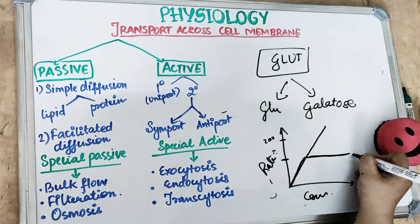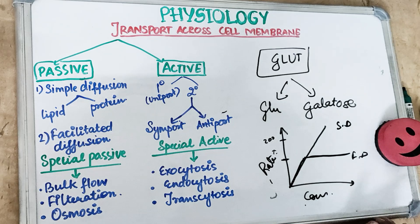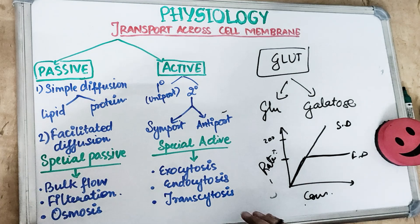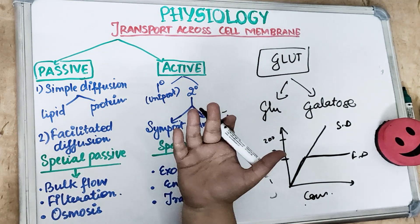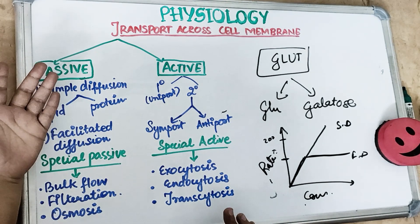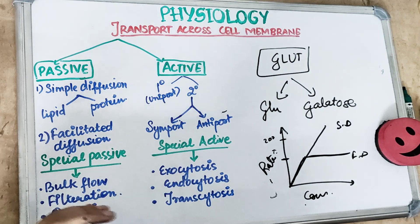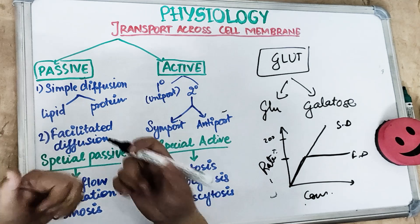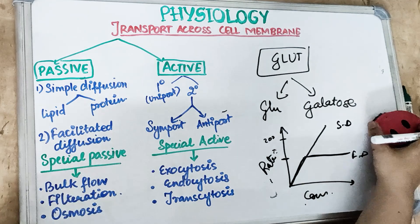Bulk flow is when a large amount of transportation occurs along a pressure gradient, all at once. For example, gas exchange in the lungs occurs by bulk flow. Filtration works against hydrostatic pressure and the weight of the fluid - for example, filtration in the glomerulus of the kidney.